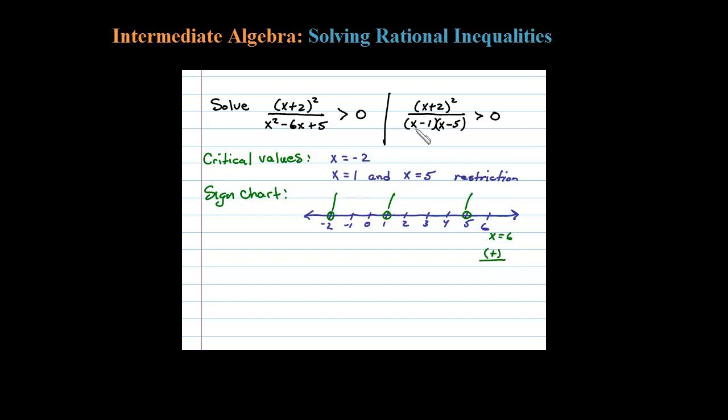6 into the denominator I'll have 6-1 which is positive and 6-5 which is positive. So I have a positive number times a positive number, the result will be positive, and that'll be true for any number in that interval. Okay, let's choose a test value in this interval here, say 3.